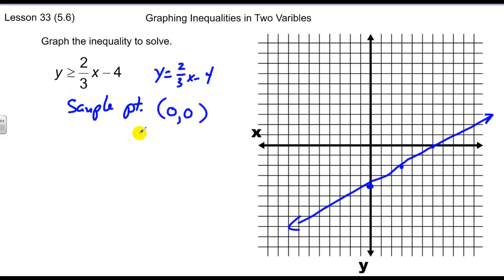Plugging zero, zero into my original equation, I get zero is greater than or equal to two-thirds times zero minus four. So this says zero is greater than or equal to negative four, and this ends up being a true statement. So what that tells me is that this sample point of zero, zero is in my solution region for this inequality. If this is in my solution region, every point in this area is in my solution region.